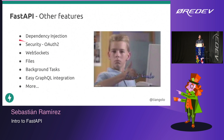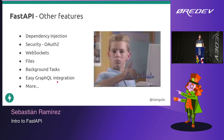FastAPI has many other features: a dependency injection system you can use to handle databases, authorization, logging, and a bunch of different things. It makes it very easy to integrate with many different tools without needing a plugin system — you can just use the libraries you would normally use, right away, without any type of plugin or integration. There are also internal utilities for security and authentication with OAuth 2, WebSockets, files, background tasks, GraphQL integration, templates — everything you would expect from one of these frameworks.